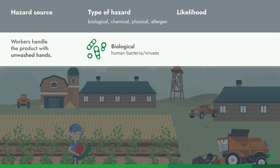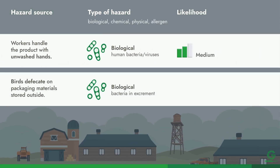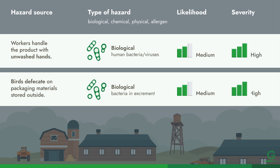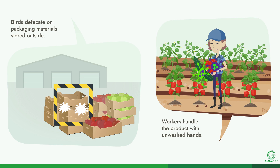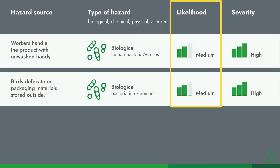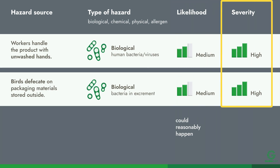The third step is to assess the likelihood that each hazard will occur. For the fourth step, think about what the severity or consequence of each hazard would be, and add this information to your list. For example, the feces of birds would contaminate the product with bacteria, and unwashed hands touching the product could transfer human pathogens, like viruses or bacteria, to the product. In both cases, the likelihood may be medium because they could reasonably happen, and the severity would be high because biological contamination could lead to human illness.